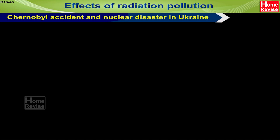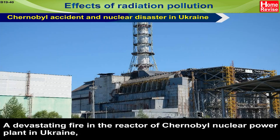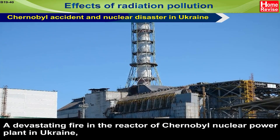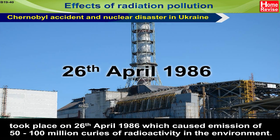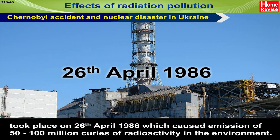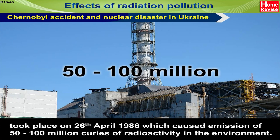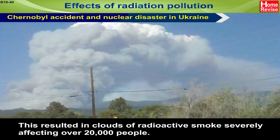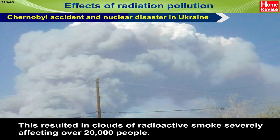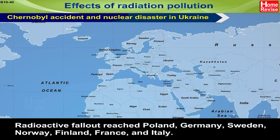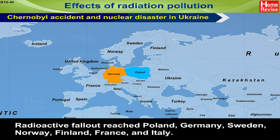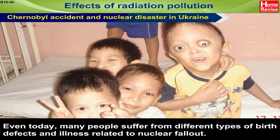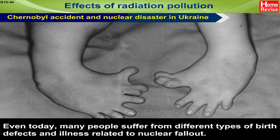Effects of radiation pollution — Chernobyl accident and nuclear disaster in Ukraine. A devastating fire in the reactor of Chernobyl nuclear power plant in Ukraine took place on 26 April 1986, causing emission of 50 to 100 million curies of radioactivity into the environment. This resulted in clouds of radioactive smoke severely affecting over 20,000 people. Radioactive fallout reached Poland, Germany, Sweden, Norway, Finland, France, and Italy. Even today, many people suffer from different types of birth defects and illness related to nuclear fallout.